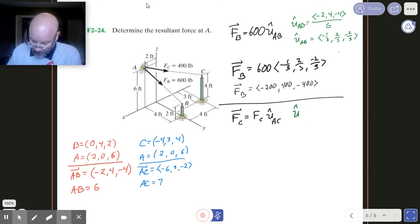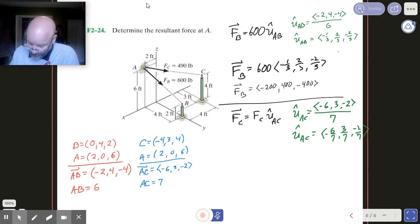So the unit vector AC is going to be minus 6, 3, minus 2 divided by 7. So that gets us minus 6 sevenths, 3 sevenths, and minus 2 sevenths. I'm going off the page a little bit there, but I think it'll be all right.